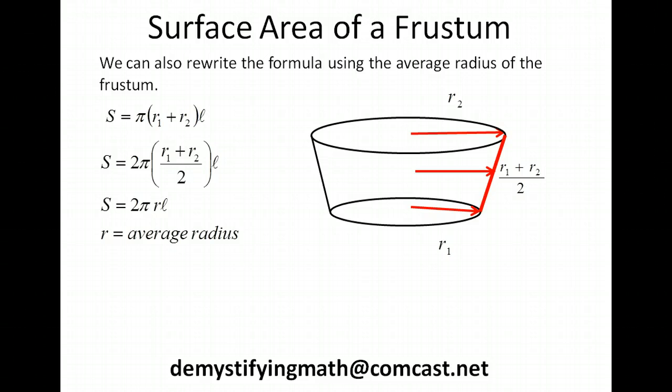So we have 2π times r, where r represents the average radius, times L. So this gives us a formula for the surface area of a frustum: S = 2πrL. Remember r is going to represent the average radius.